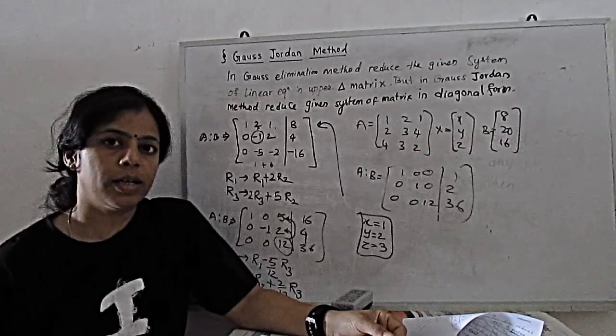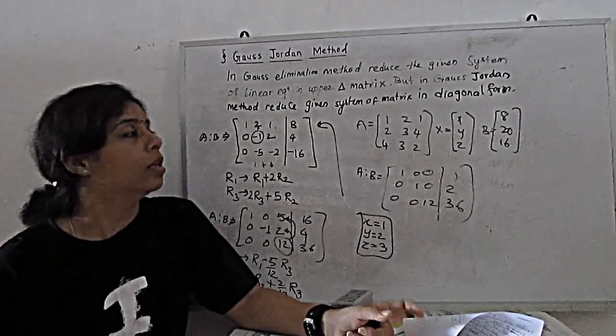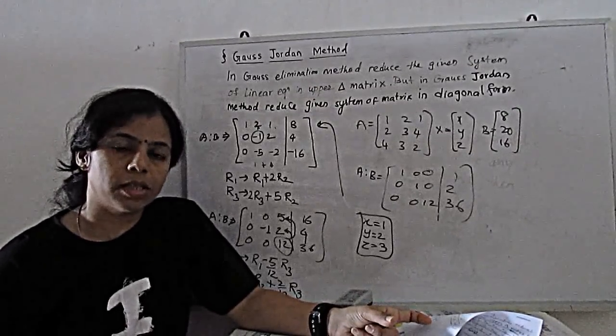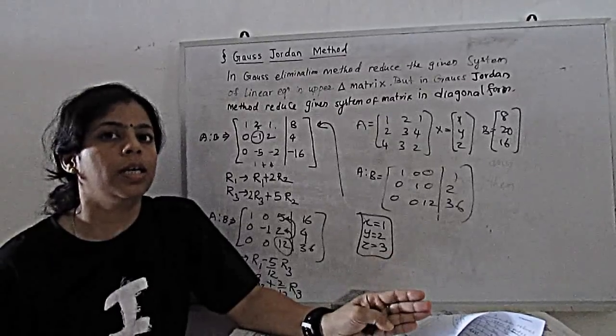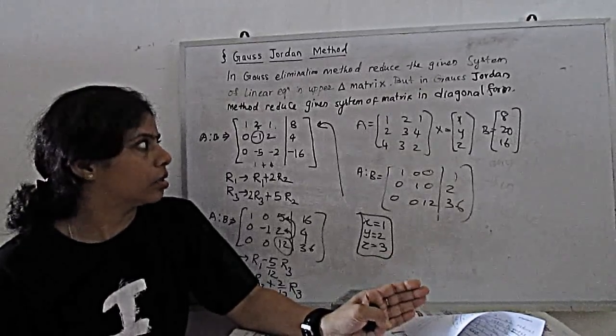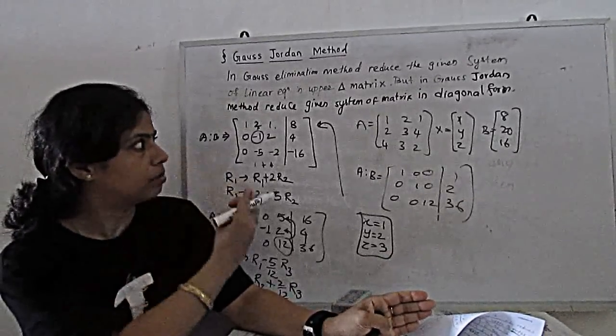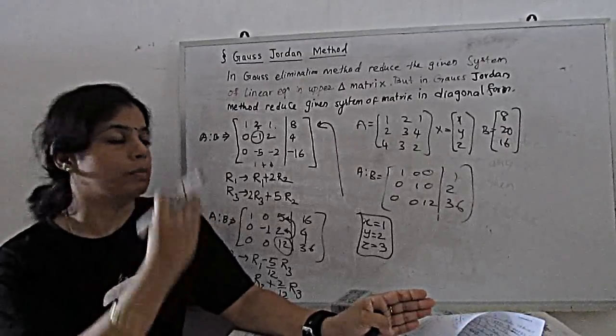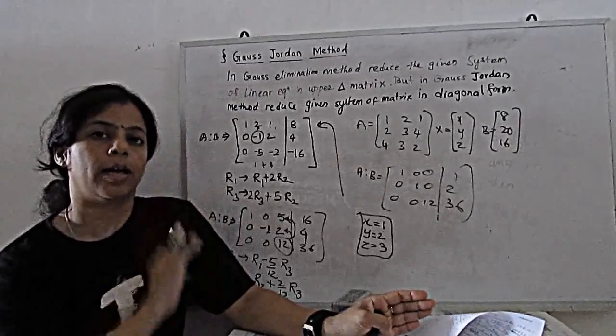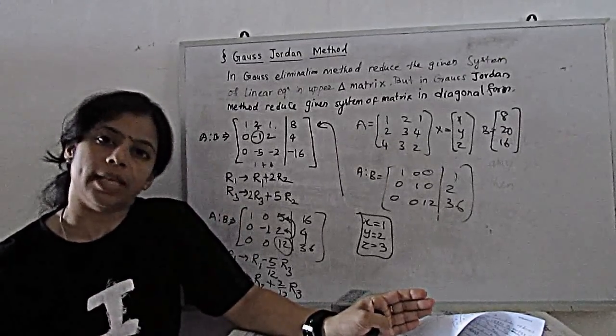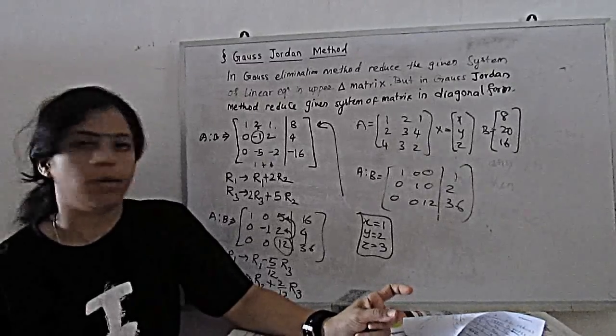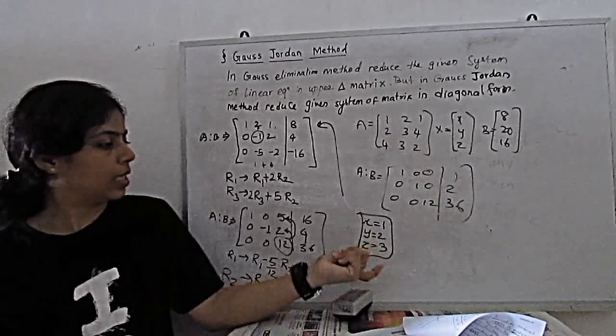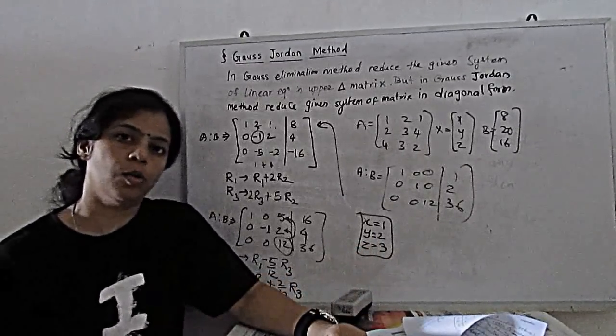Little bit more further elimination from Gauss elimination. In Gauss elimination, we eliminate only the upper triangular matrix, lower part of it. In this method, we have to reduce all other than diagonal to 0 with the help of row operations. When you go step by step, you will easily get the solution. Thank you very much.